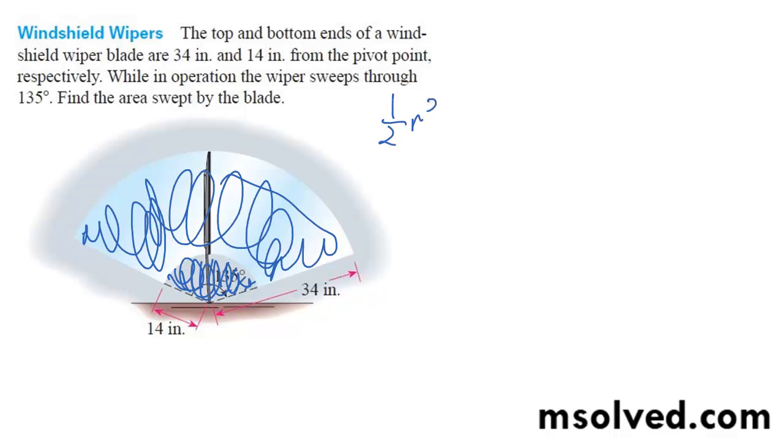So it's going to be simply 1 half r squared theta. Not theta squared, excuse me. It's just theta.